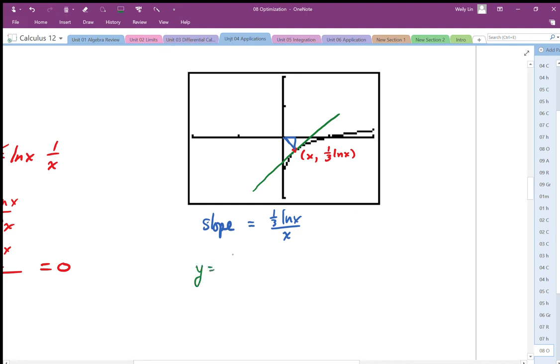So I have y is equal to one-third log x. So y prime is equal to one over three x. So there's my derivative, and I want to know the slope y prime at some point x, and so it's going to be one over three x.